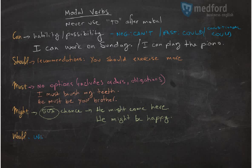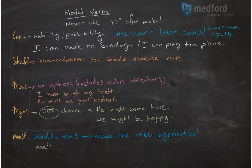Next is 'would.' You use all modals plus a verb, but in this case you use 'would' plus a verb to make the verb hypothetical. So if you say 'would go,' it's hypothetical. For example, 'I would go to school today, but I can't' — it's only a hypothesis.